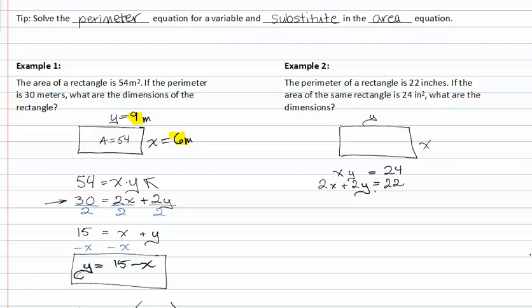Once again, I'm going to solve for y in the perimeter problem. I do this by dividing by two to get all the factors away from y. So now I have x plus y is equal to eleven. Now I subtract x from both sides, and I get y is equal to eleven minus x.